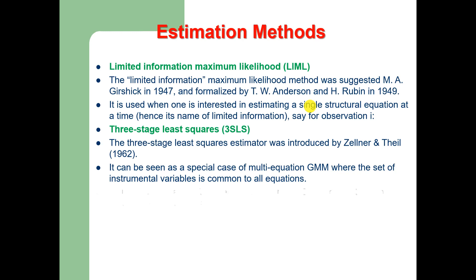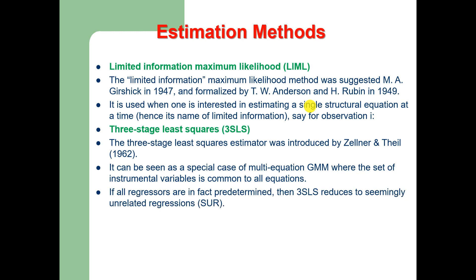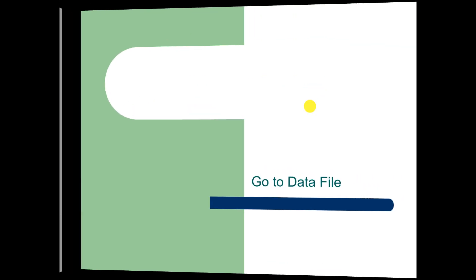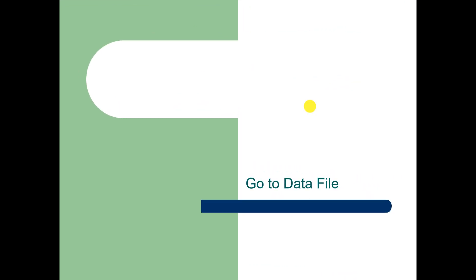If all regressors are in fact predetermined, then 3SLS reduces to the Seemingly Unrelated Regression (SUR) model. Thus it may also be seen as a combination of Two-Stage Least Squares with SUR. We may now go to Stata and use a data example.